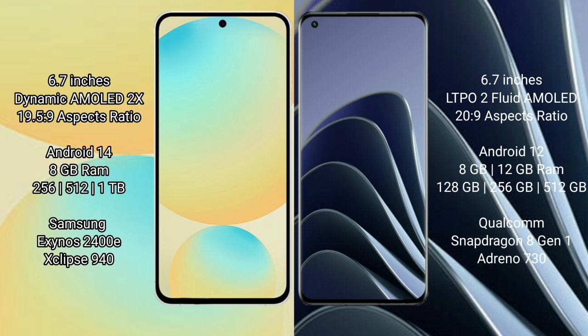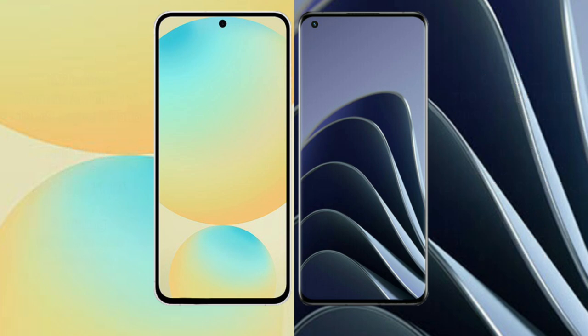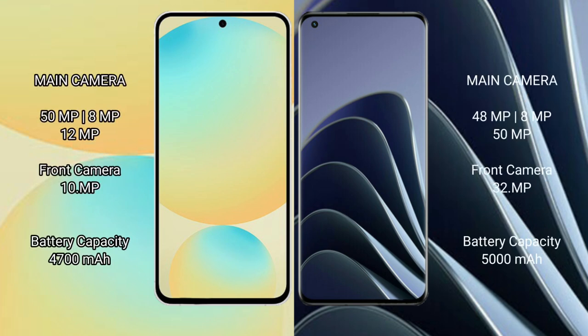The Samsung Galaxy S24 FE is powered by the Exynos 2400e processor with an Xclipse 940 GPU. The OnePlus 10 Pro comes with 8GB or 12GB RAM and 128GB, 256GB, or 512GB internal storage, powered by the Qualcomm Snapdragon 8 Gen 1 processor with an Adreno 730 GPU.